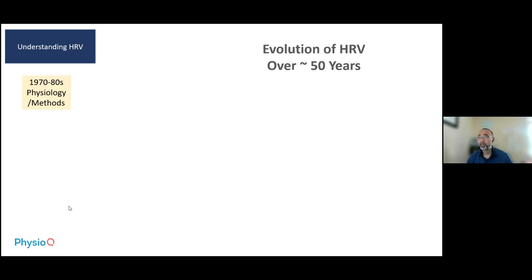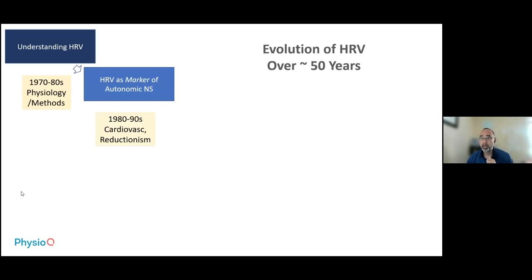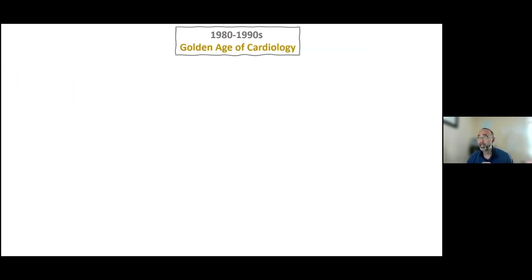Now we're focusing on part two: heart rate variability as a marker of autonomic nervous system. I'm talking about the 1980s and 1990s, when cardiovascular medicine was pretty much at its golden age. Research was focused on reductionistic approaches — breaking down components and focusing on specific factors involved in disease processes. As a result, heart rate variability became a way to hone in on the autonomic nervous system.